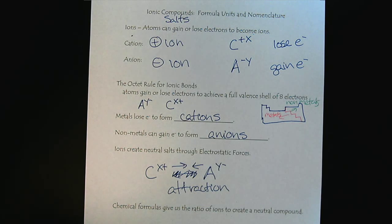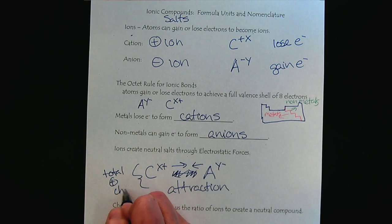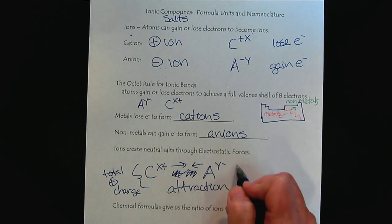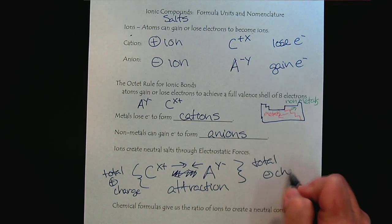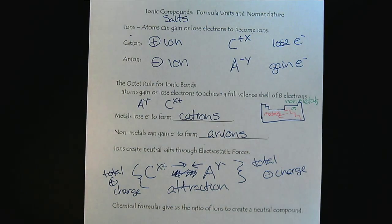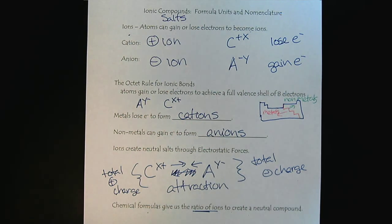Now, the important thing here is that we have to make sure that the total positive charge is equal to the total negative charge. And so, that is how we create the chemical formulas for ionic compounds. Creating the chemical formula is we have to figure out the ratio of the ions so that our total positive charge equals our total negative charge.